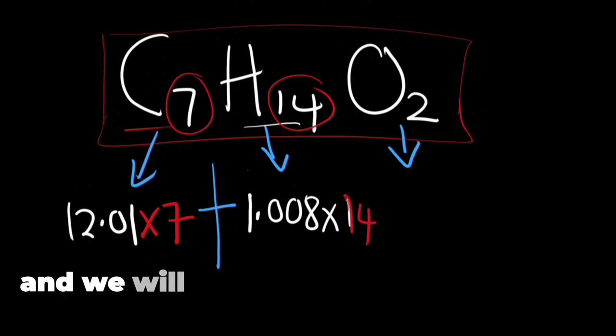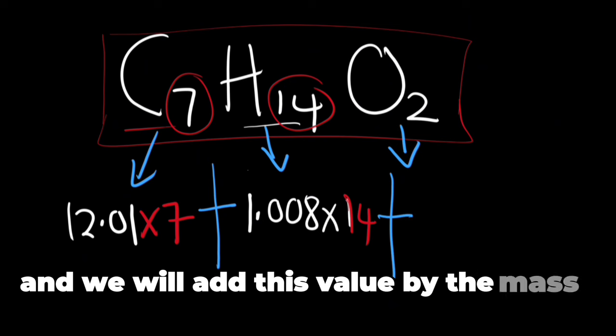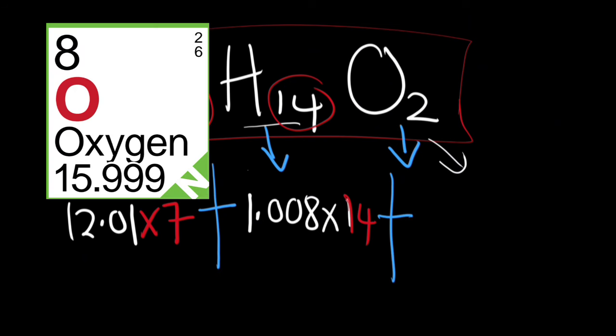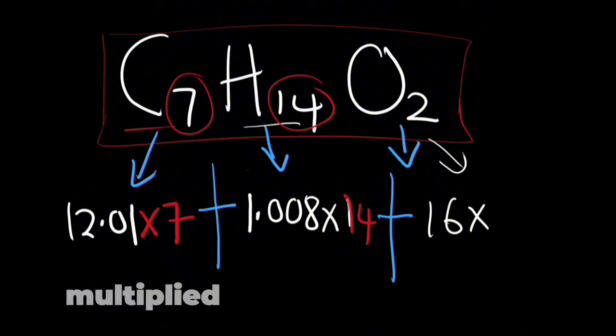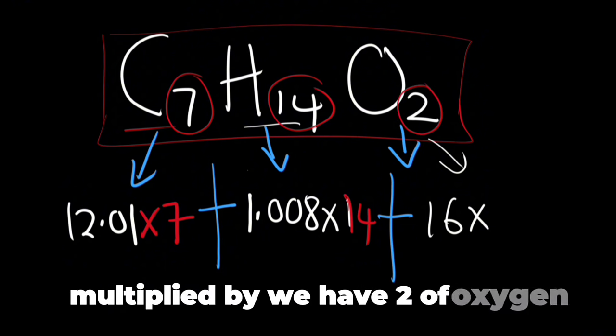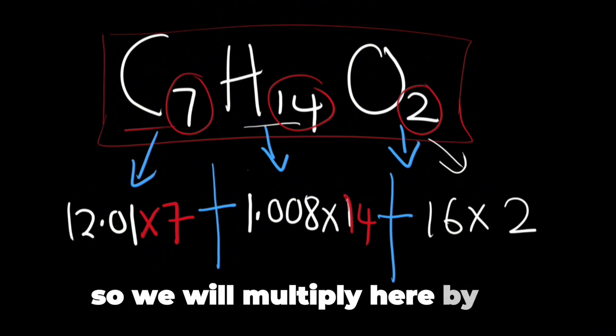And we will add this value by the mass of oxygen from the periodic table which is 16. Multiply by, we have 2 of oxygen so we will multiply here by 2.